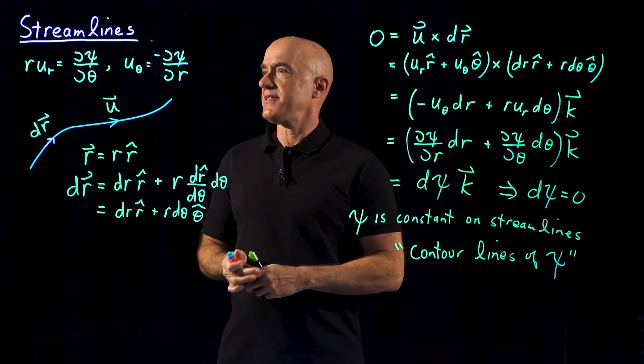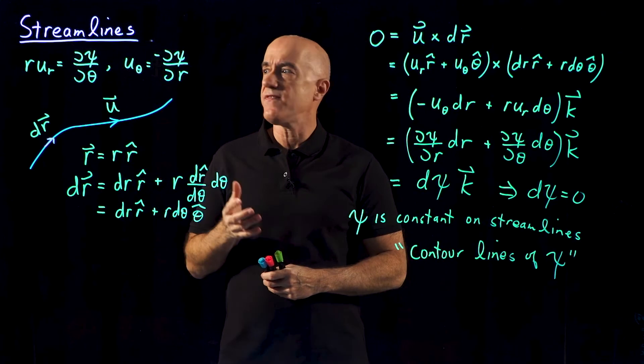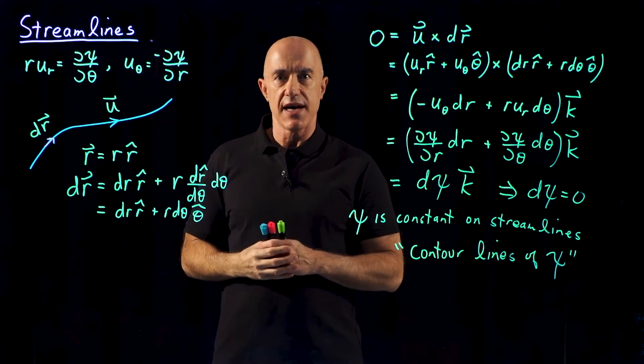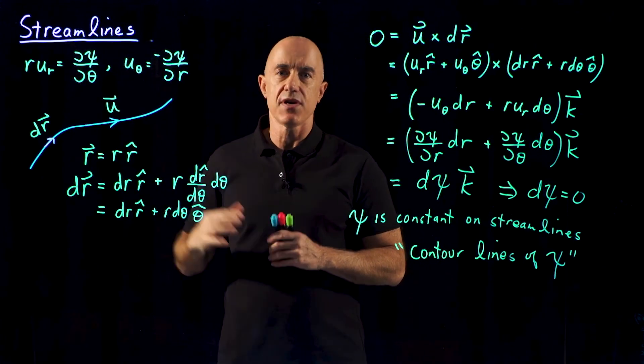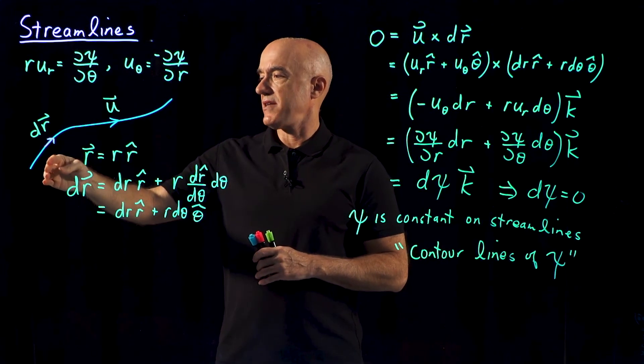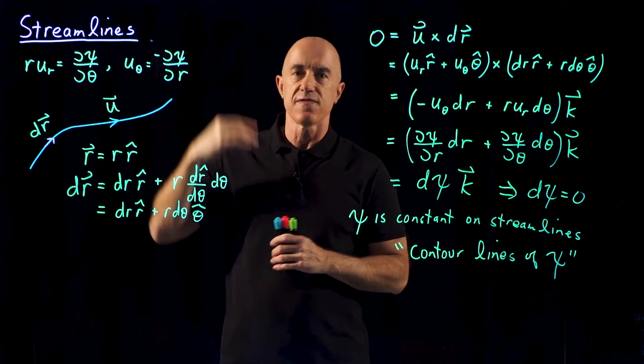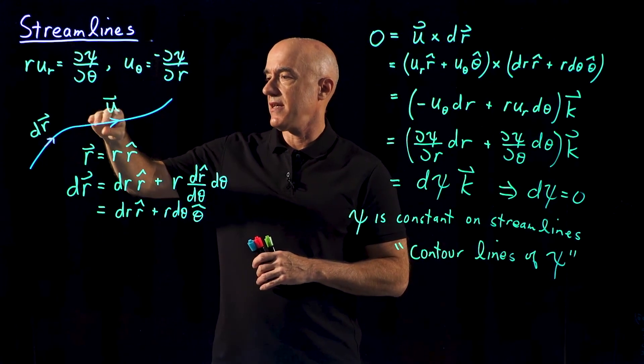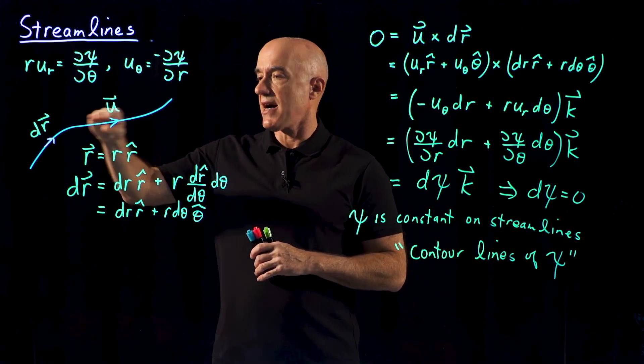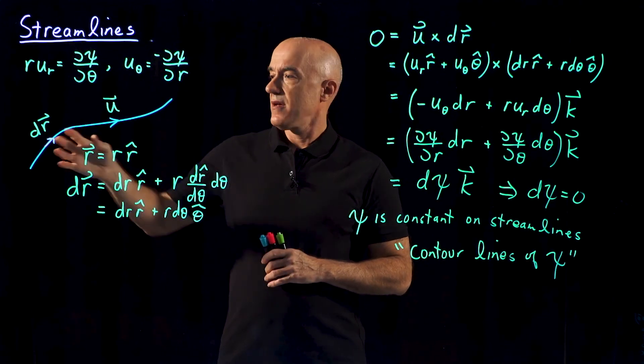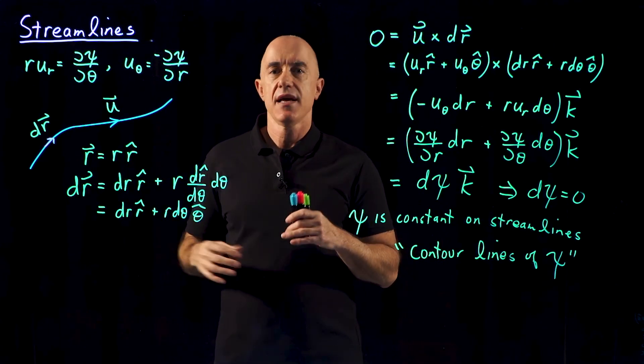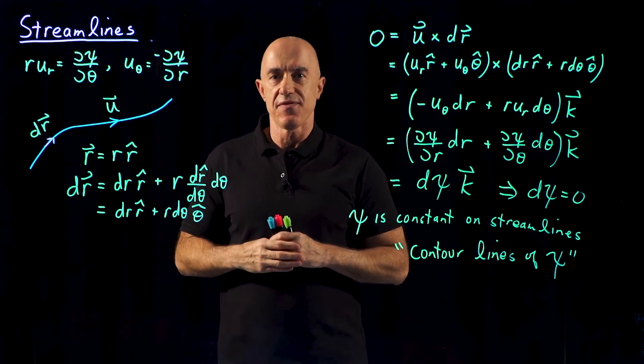So let me summarize. We've introduced a stream function in order to eliminate the two components of the velocity field. It turns out the stream function has a very clear meaning. If we plot a streamline, which is a curve which follows the flow of a fluid, so the velocity is along the streamline, then the stream function is constant along the streamline. So by plotting curves of constant stream function, we can plot the streamlines and have a clear visualization of the flow field.